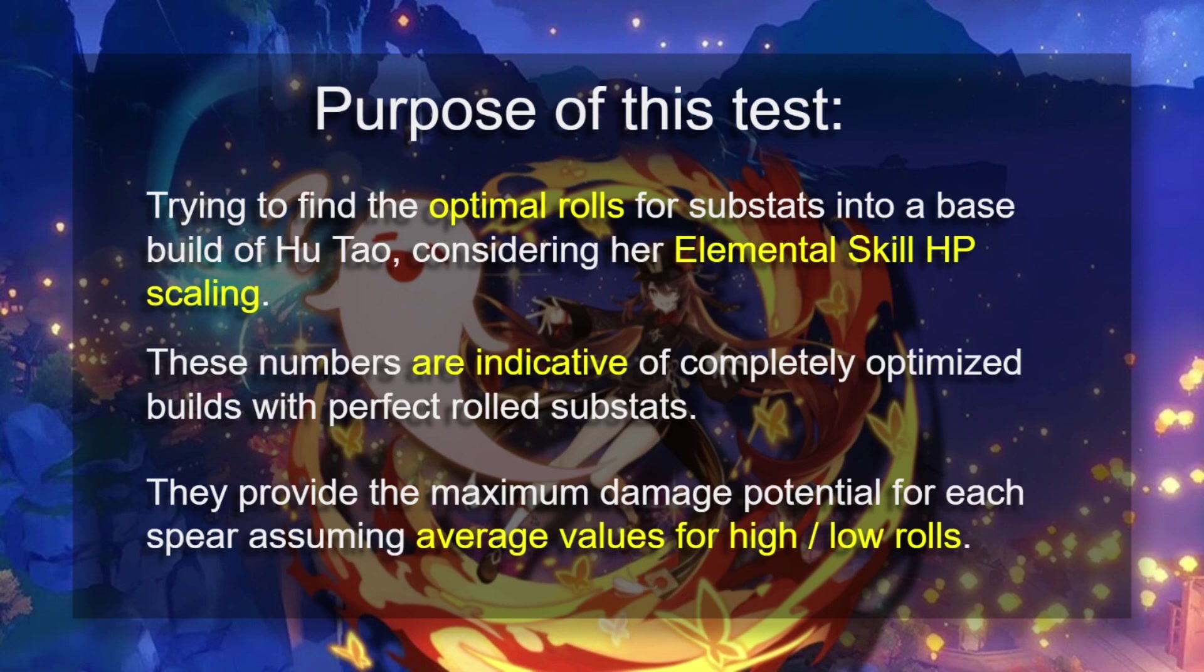The purpose of this test is finding the optimal rolls for the substats into a base build of Hu Tao, considering her elemental skill HP scaling. These numbers are indicative of basically completely optimized builds with perfectly rolled substats, but not every single substat perfectly rolled. We're only assuming that 50% of our substats rolled perfectly. The rest can actually be garbage, and I can make a video later on the theoretical maximum build, but basically almost none of us is ever going to achieve that.